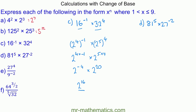For question d, we can write 81 and 27 using the base of 3. So 81 is 3 to the power of 4, raised to the power of 5, which becomes 3 to the power of 20. And 27 is 3 cubed, raised to the power of negative 2, giving 3 to the power of negative 6.